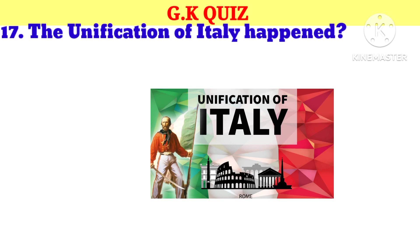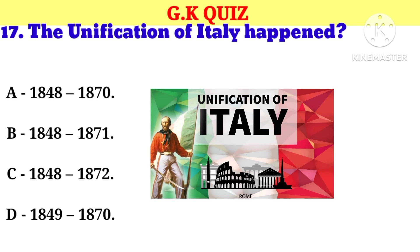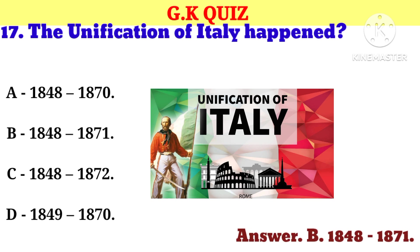Question number 17. The unification of Italy happened when? Your options: A. 1848 to 1870, B. 1848 to 1871, C. 1848 to 1872, D. 1849 to 1870. And now your correct answer is B. 1848 to 1871.